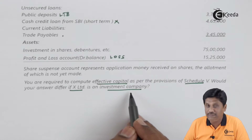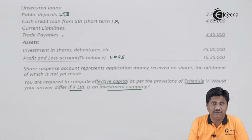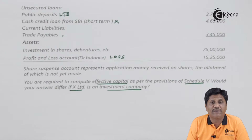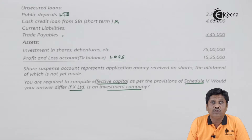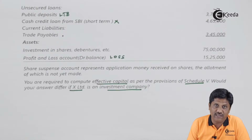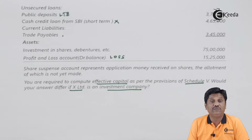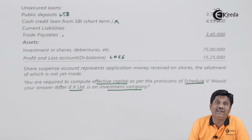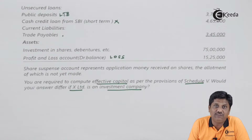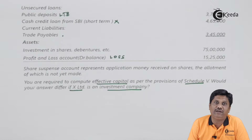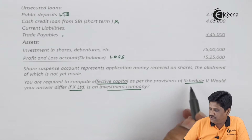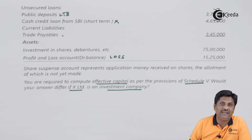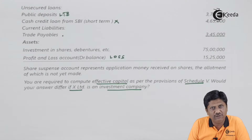They have also asked: would your answer differ if X Limited is an investment company? If you think about it, in the case of an investment company, investments are treated differently — as an asset which will be taken as a loss, meaning it will be deducted when you calculate effective capital. Let us find out the effective capital in both cases: first as a non-investment company, and second as an investment company. There will be a minor difference.